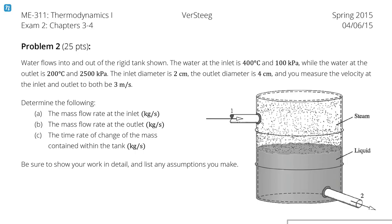Problem 2. Water flows into and out of the rigid tank shown. The water at the inlet is 400 degrees Celsius and 100 kilopascals, while the water at the outlet is 200 degrees Celsius and 2500 kilopascals. The inlet diameter is 2 centimeters, the outlet diameter is 4 centimeters, and the velocity at the inlet and outlet is both 3 meters per second. Determine the mass flow rate at the inlet and outlet, and the time rate of change of the mass contained within the tank.